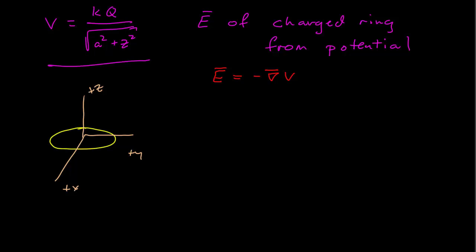First of all, we recognize that by symmetry there is only a z component. If we write this out, we have the negative derivative: dV/dx i-hat minus dV/dy j-hat minus dV/dz k-hat.